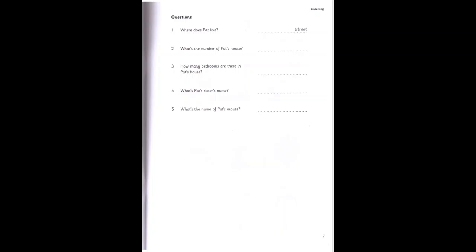Five. Now, Pat, have you got an animal in your house? Yes, I've got a mouse. Oh. Has it got a name? Yes. Its name is Bill. Can you spell that for me? Yes. It's B-I-L-L.